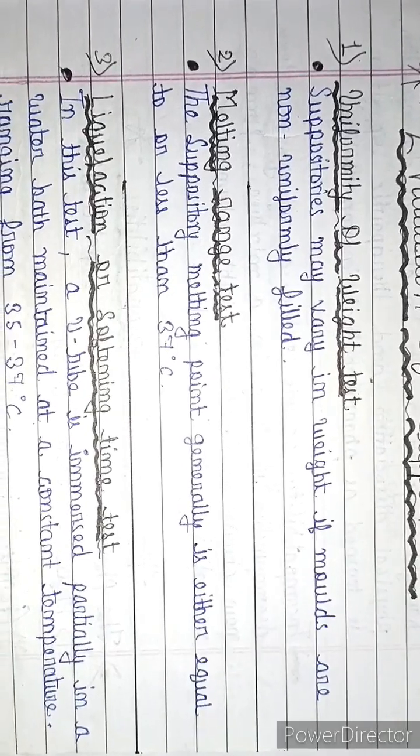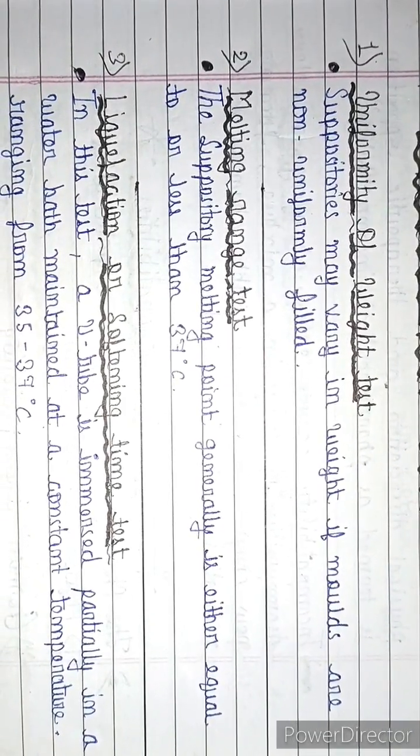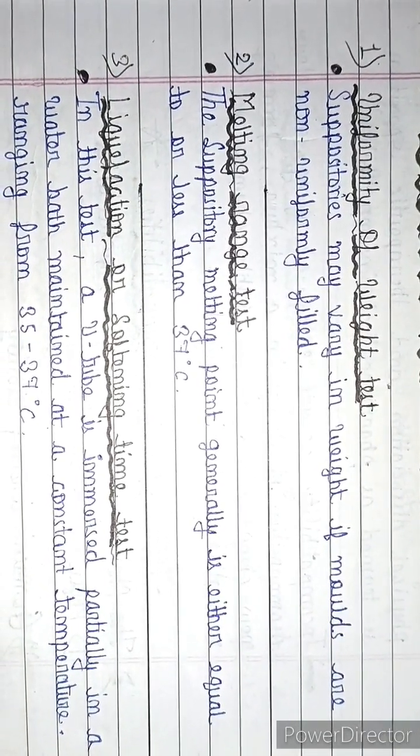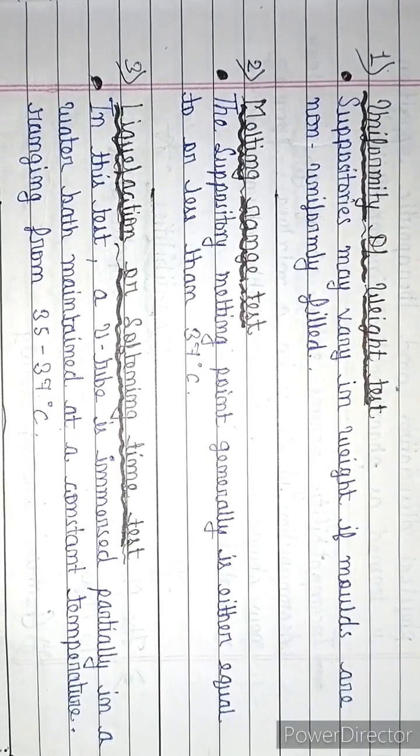Second test is melting range test. The suppository melting point is generally either equal to or less than 37 degrees Celsius.